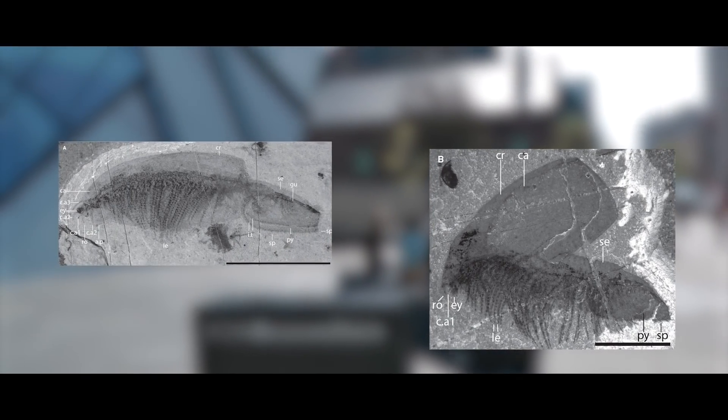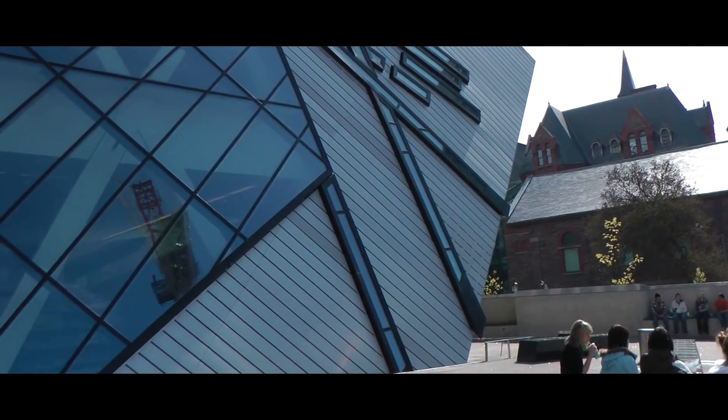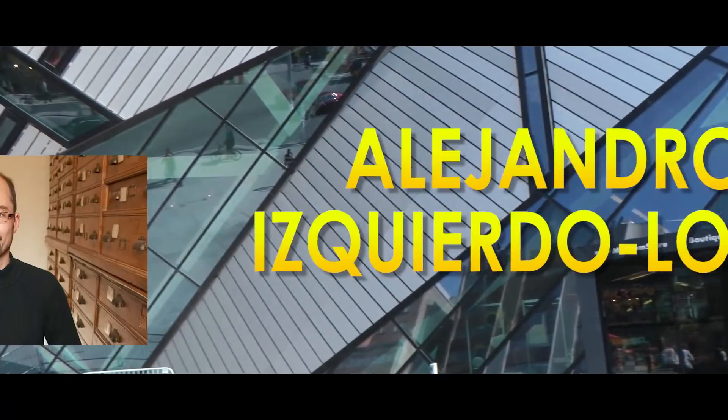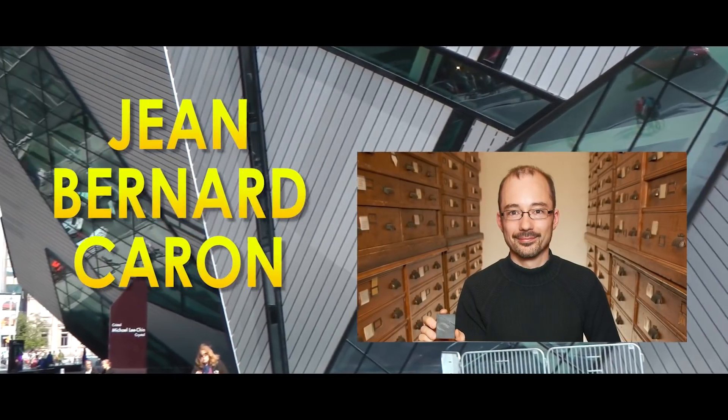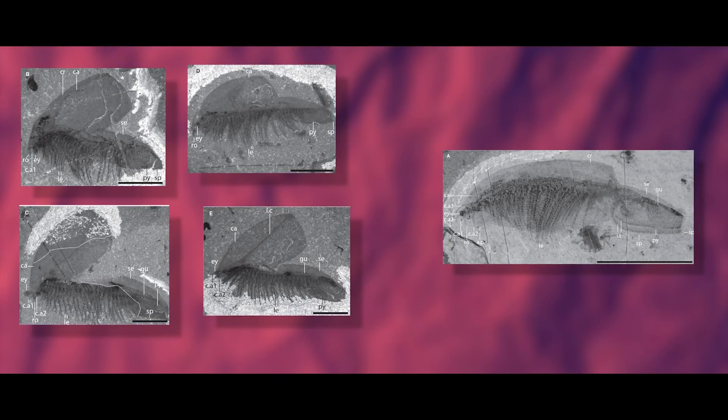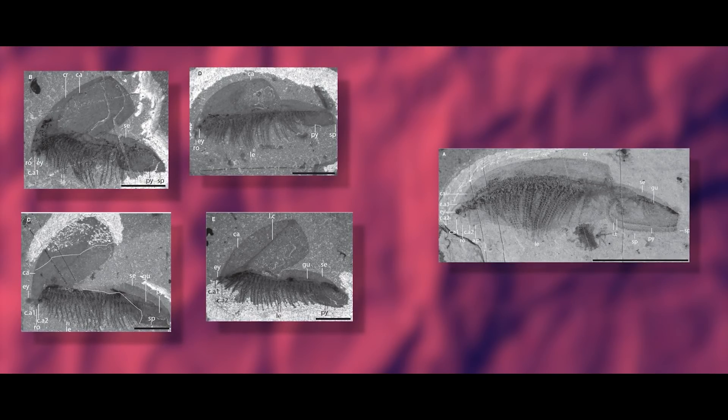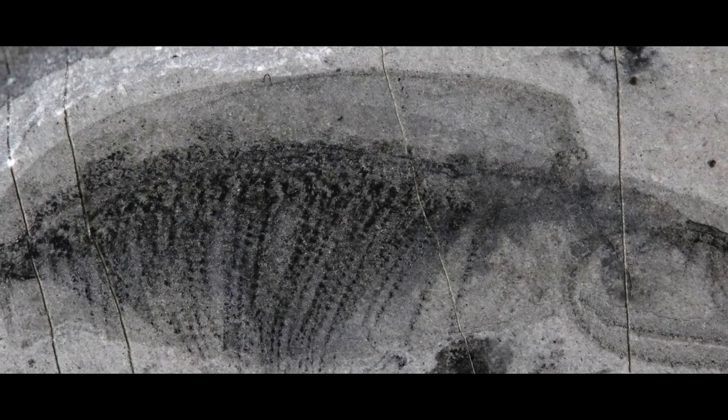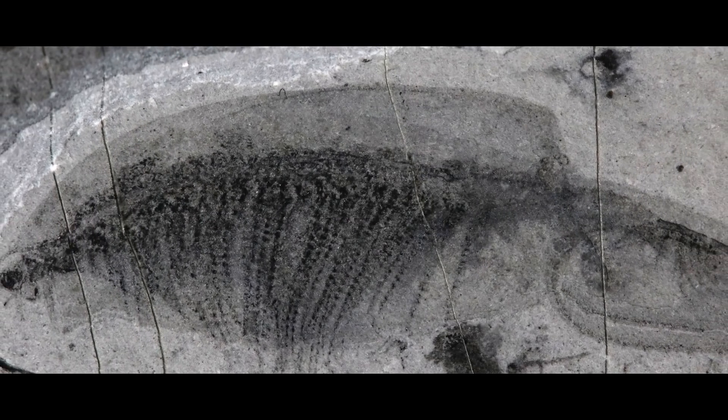by a team from the Royal Ontario Museum, which included the new paper's authors Alejandro Izquierdo Lopez and Jean Bernard Caron. All of these specimens were preserved as two-dimensional carbon or aluminosilicate films of the entire animal, most of which had all of their soft tissues preserved, some even with remnants of their gut contents.